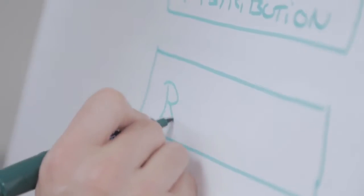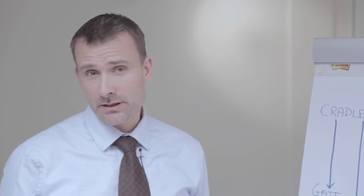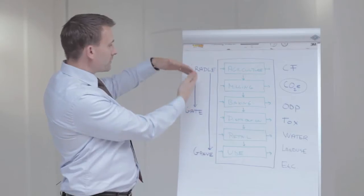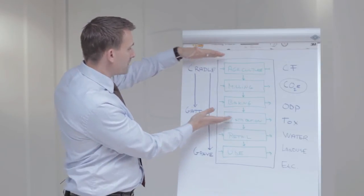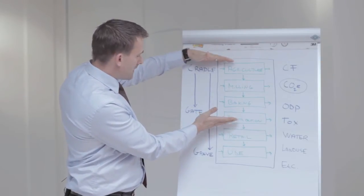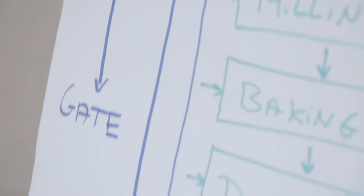Life cycle assessment is a methodology to analyse or assess the environmental burdens from a product along its life cycle. You can have different perspectives or scopes in your LCA. You can have cradle to gate where you only look at the production of the product. And you can have cradle to grave where you also include the use phase and of course retail of the product.